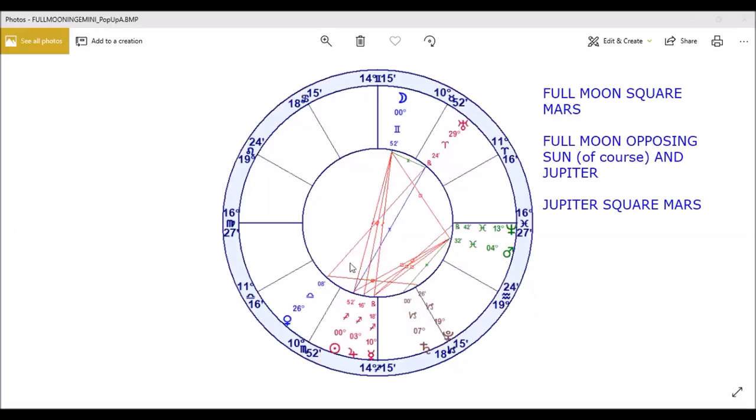But ultimately, so far, we've got these aspects right here. And these are some aspects that are making you want to speak up about some things that are maybe going on and let more people in. Jupiter's expansive. Let more people in. Let more information in.